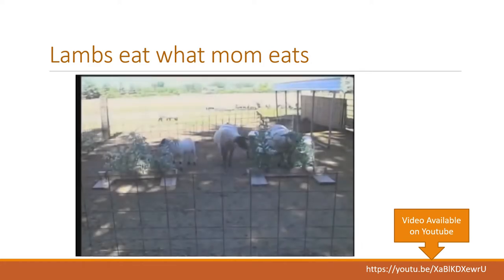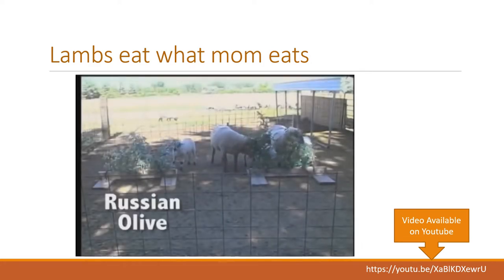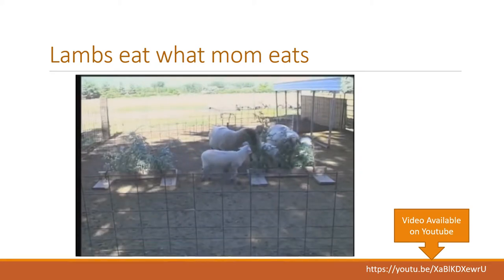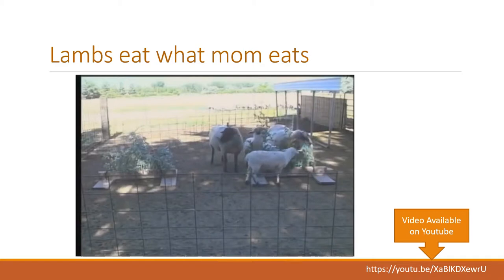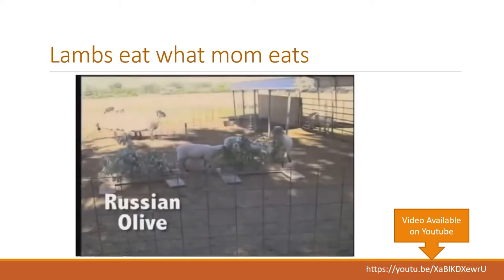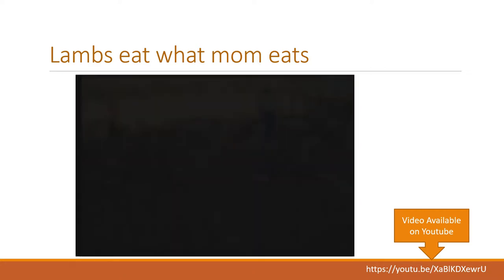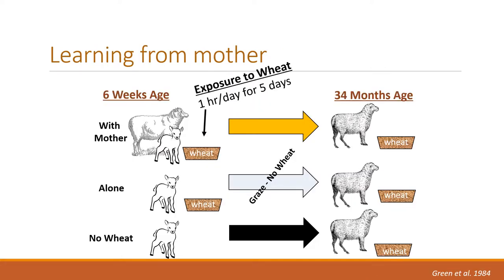This second set of ewes are averted to Russian olive but eat caragena. After exposure to the shrubs, the lambs are sent in to graze without their mothers. Again, they choose to eat what mom ate. So as you can see, mother is a really important model to tell animals what to eat and what not to eat.